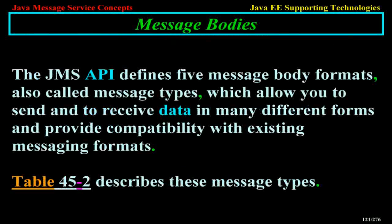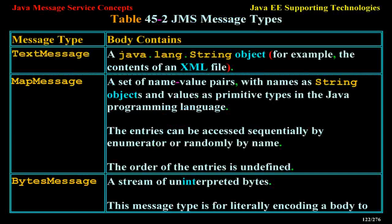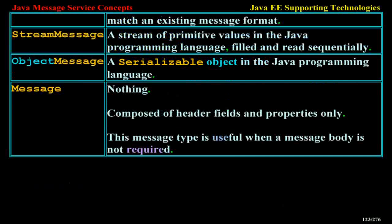The five JMS message types are: TextMessage — a Java String object, for example the contents of an XML file; MapMessage — a set of name-value pairs with String names and primitive Java values, accessible sequentially or randomly; BytesMessage — a stream of uninterpreted bytes for encoding a body to match an existing message format; StreamMessage — a stream of Java primitive values filled and read sequentially; ObjectMessage — a serializable Java object; and Message — composed of header fields and properties only, useful when a message body is not required.